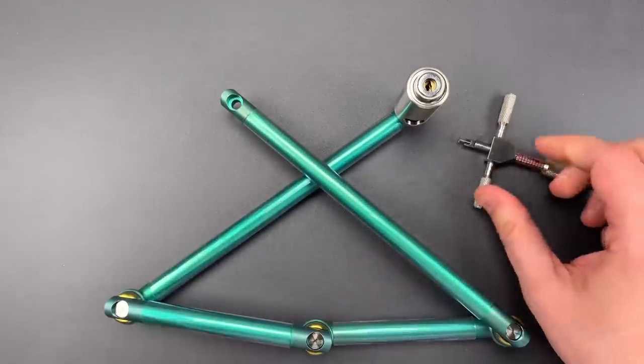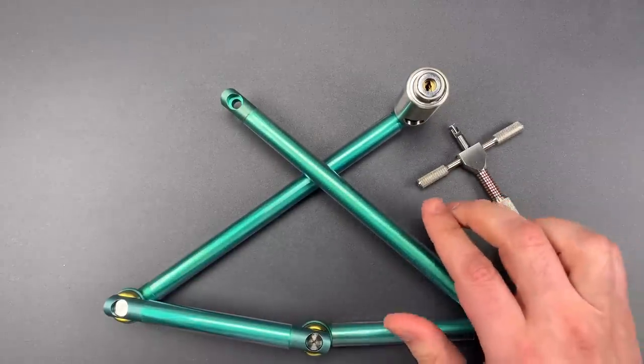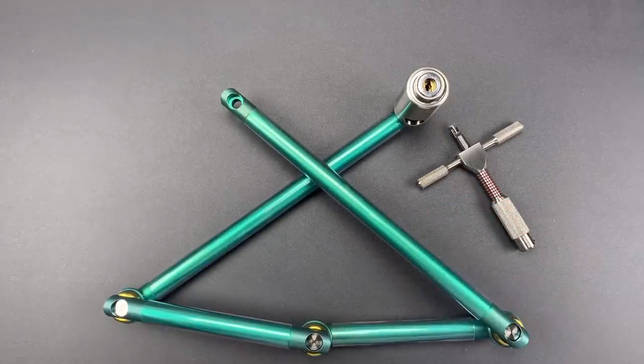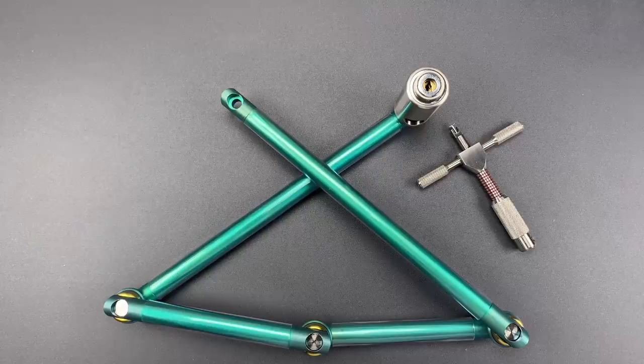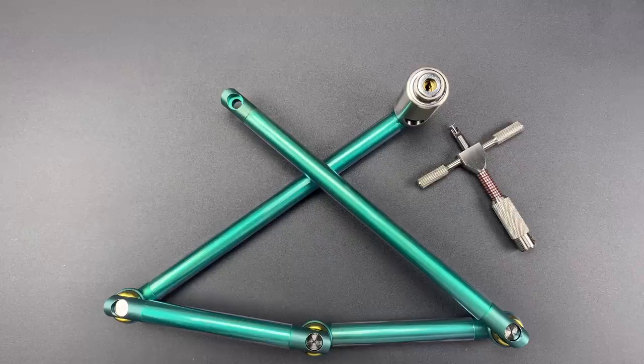As you saw, this is not a terribly tricky lock to pick. Someone who's experienced with disc detainer locks is not going to be slowed down for very long. However, the number of people who are experienced with these cores is relatively low. So until that changes, it's probably enough pick resistance for the streets.